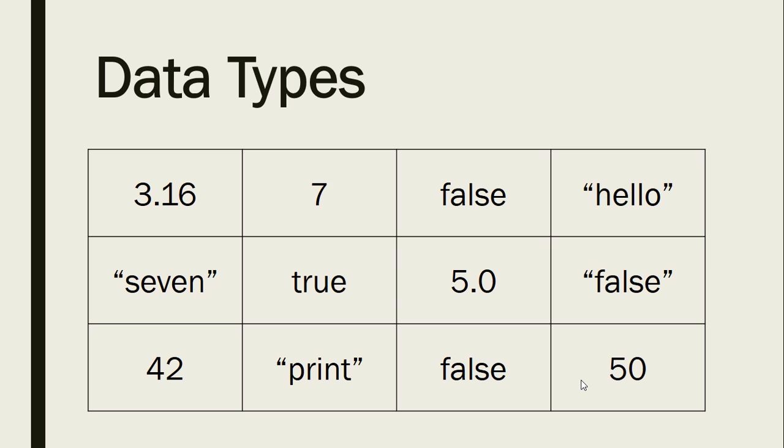All right. Third, we have false. False. And if you said Boolean, that's correct. All right. Next, we've got hello. And if you said string, great job. That's a string with those quotation marks there.